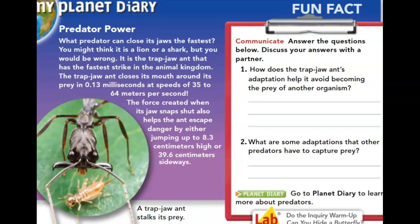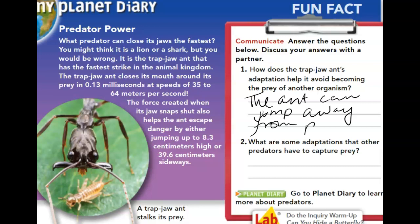Question one asks how the trap-jaw ant's adaptation helps it avoid becoming prey. The ant can jump away from predators trying to attack. We know this because the text says it can jump up to 8.3 centimeters high or 39.6 centimeters sideways.